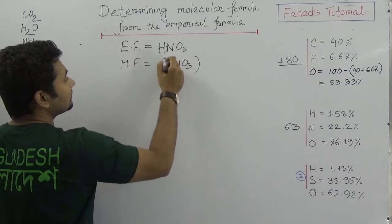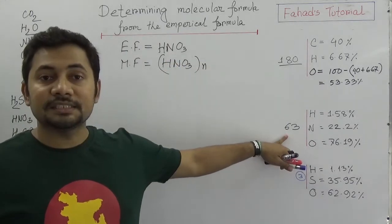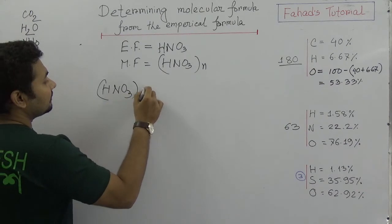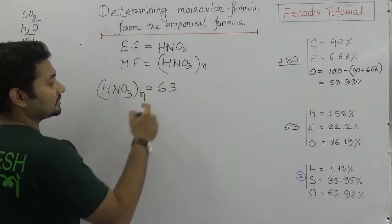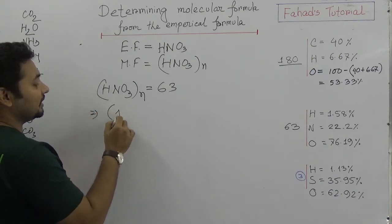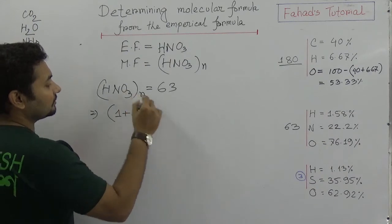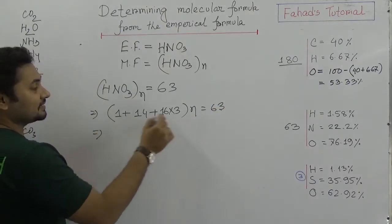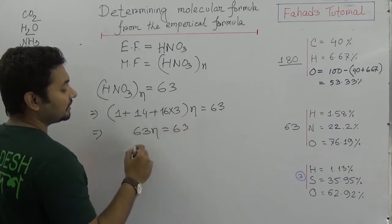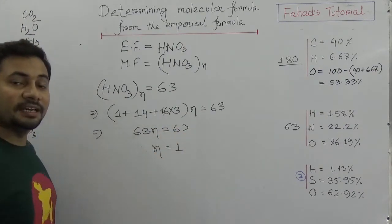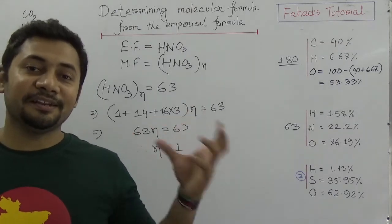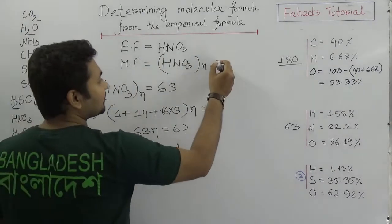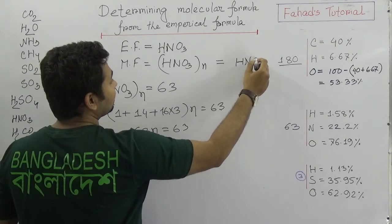Now think about the molecular mass of HNO3: hydrogen is 1, nitrogen is 14, and oxygen is 16 times 3 = 48 — altogether that is 63. So 63N = 63, which gives N = 1. When N = 1, it means the empirical formula is equivalent to the molecular formula. So the molecular formula is HNO3, which is nitric acid.